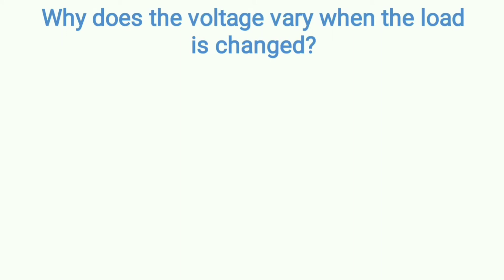Hello everyone, welcome back to my channel, Electrical Concepts. My name is Avigan Roy. In this video lecture, I'll be talking about why the voltage varies when the load is changed. I've already made one video on voltage control — why it's required and different methods of voltage control. The permissible limit for voltage variation is plus or minus six percent. If the variation stays inside this range it's okay; if it goes beyond this range, we need to perform voltage control techniques.